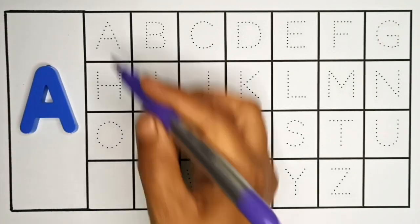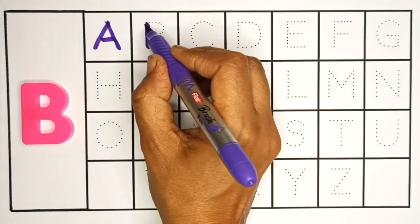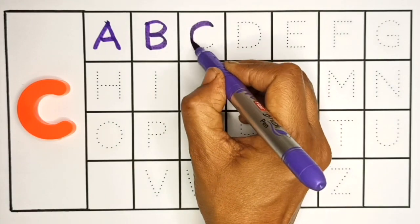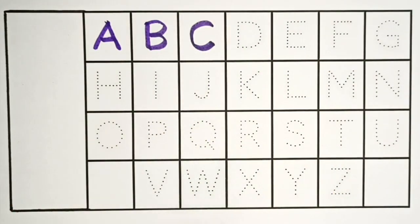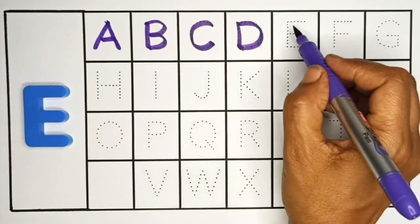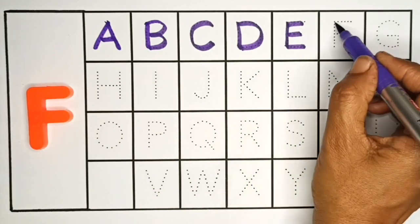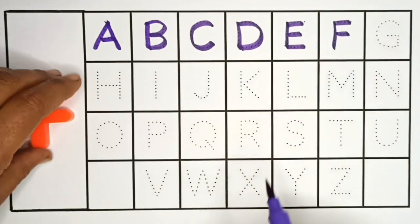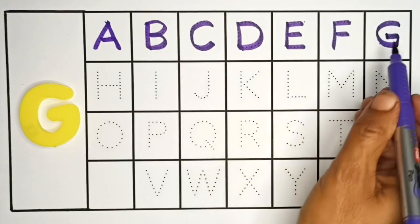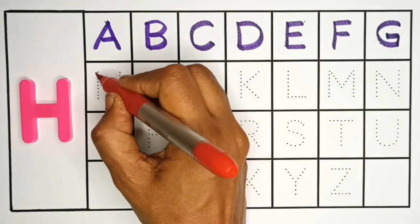A. A for apple. B. B for ball. C. C for cat. D. D for dog. E. E. E for elephant. F. F for fish. G. G for grapes. H. H.